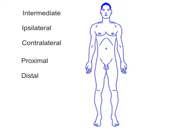Intermediate is used to describe something located in between two structures. The patellar region of the kneecap is intermediate between the femoral region of the thigh and the crural region of the anterior lower leg. Ipsilateral refers to a structure located on the same side of the body as another structure — your right hand and right foot are ipsilateral. Contralateral refers to a structure located on the opposite side of the body from another structure — your left hand and right hand are contralateral.